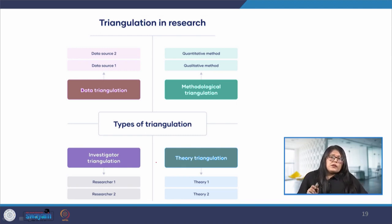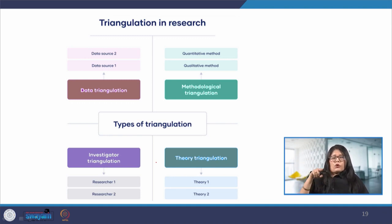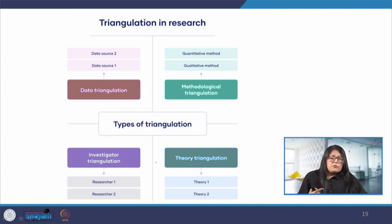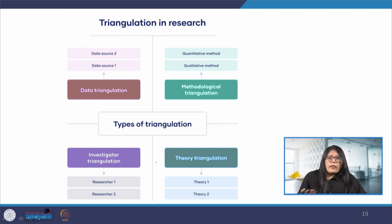In data triangulation, we use multiple data sources to answer our research questions — varying data collection across time, space, or different people. For example, to understand the shopping behavior of elderly people, we can compile and analyze data from a sample of 200 elderly people in Roorkee city over a period of 6 months, and repeat this experiment with comparable samples in different regions of the country. In investigator triangulation, we involve multiple observers or researchers to collect, process and analyze the data separately. For our previous example of teenage and elderly shopping behavior, we can involve multiple observers to examine the outcomes. Investigator triangulation helps us avoid biases.